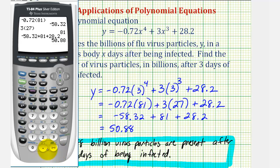We would just type in negative 0.72 times 3 raised to the fourth power, here's the exponent key, plus 3 and then in parentheses 3 to the third. So 3 exponent 3 and then plus 28.2. And enter. As we can see the answer is the same.